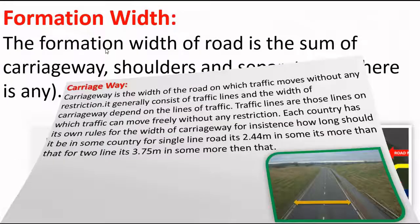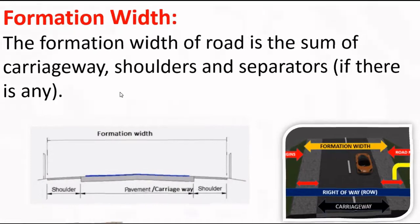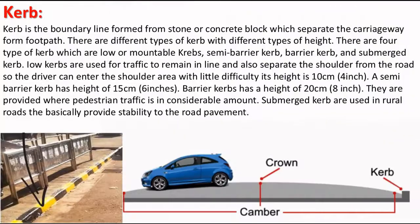The second component is formation width. The formation width of the road is the sum of carriageway, shoulder, and spreaders. The third component is curb. A curb is the boundary line formed from stone or concrete block which separates the carriageway from the footpath. There are four types of curbs: low or mountable curbs, semi-barrier curbs, barrier curbs, and submerged curbs.